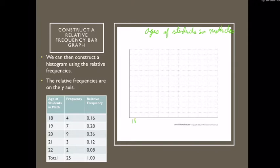I'm going to have my 18-year-olds, 19-year-olds, 20, 21, and 22-year-olds. This is our ages, that's numerical data. Over here, I'm going to have my relative frequency, which is going to go all the way up to 1. So maybe I'll have like 0.1, 0.2, 0.3, 4, 5, 6, 7, 8, 9.